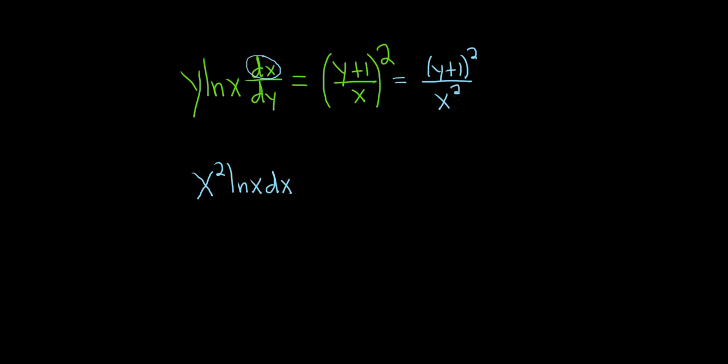You might say, okay, you multiplied by x squared, but what happened to the y and the dy? Well, this is really y over dy, so we're going to multiply by the reciprocal, so dy over y. So when we do that, we'll have y plus 1 squared over y dy.